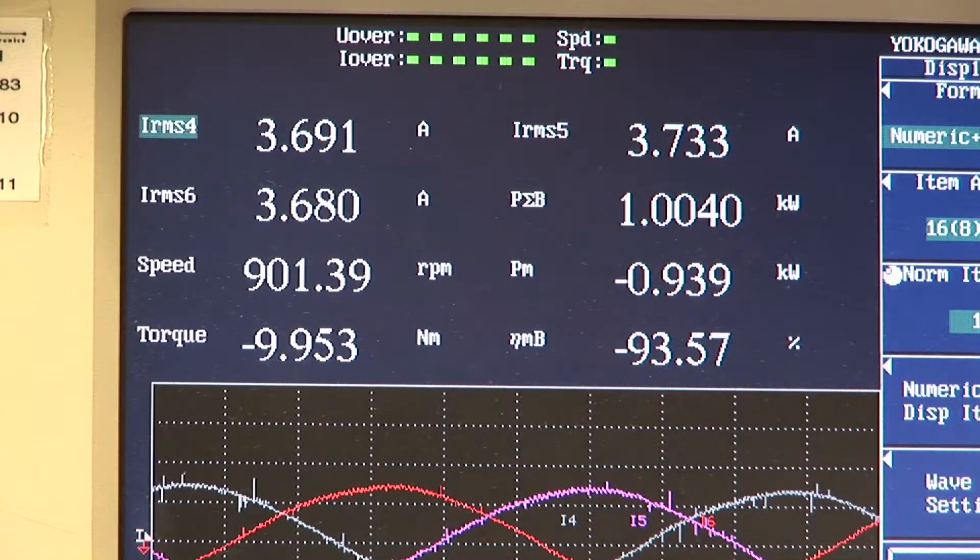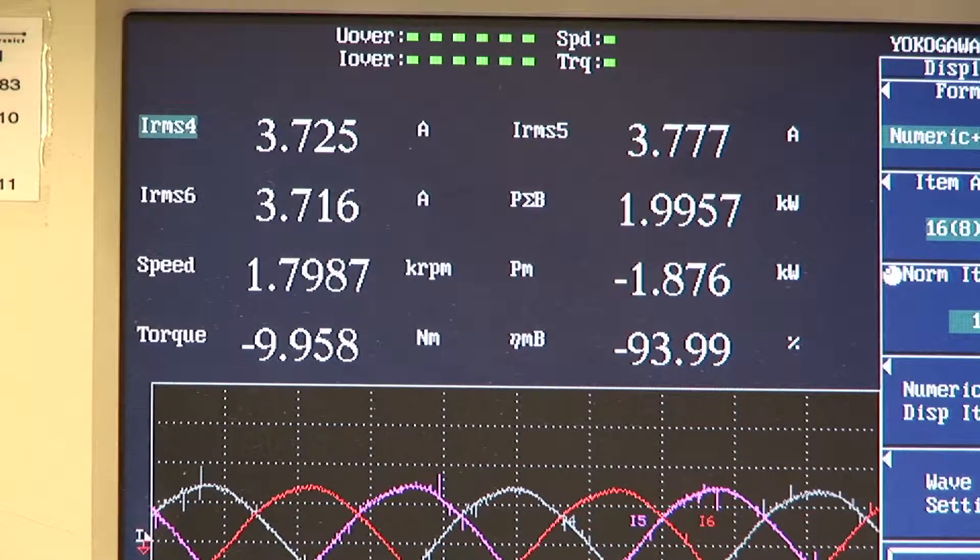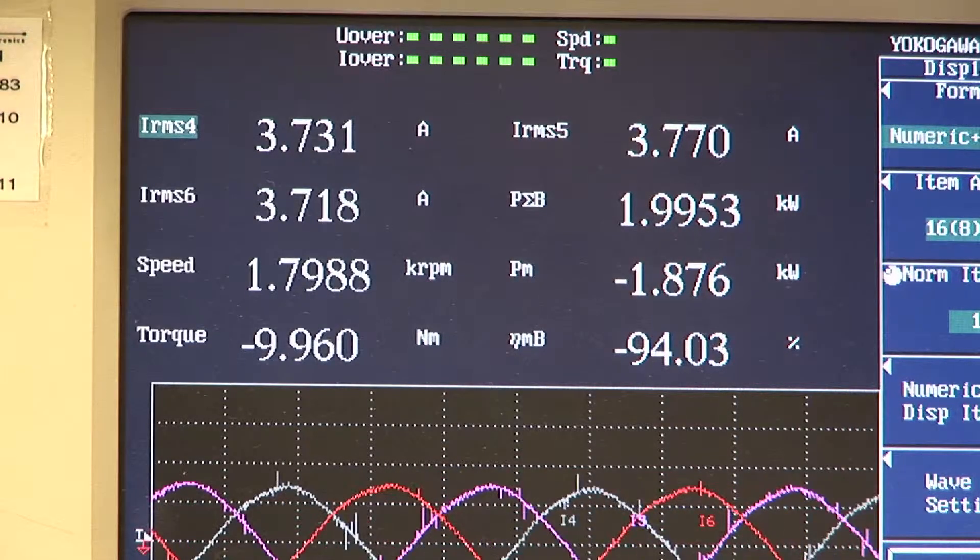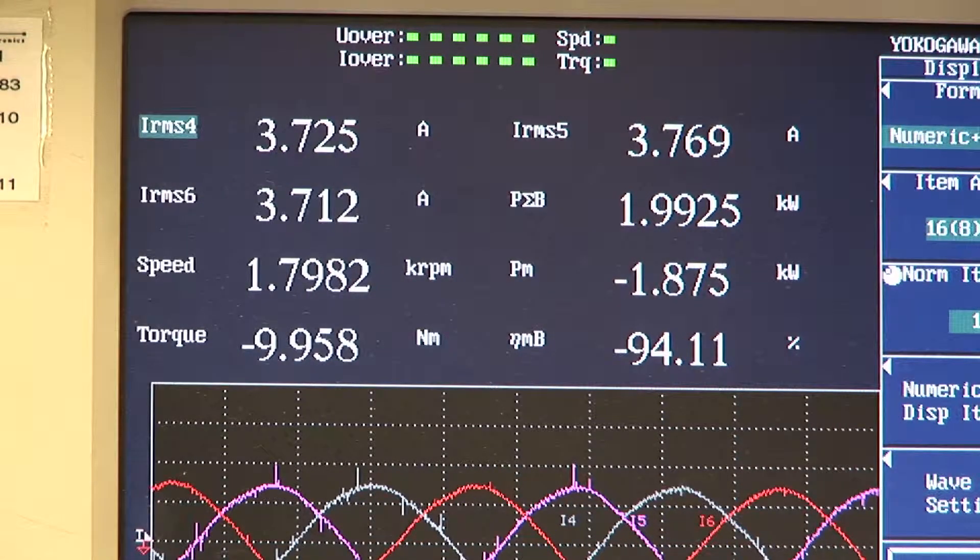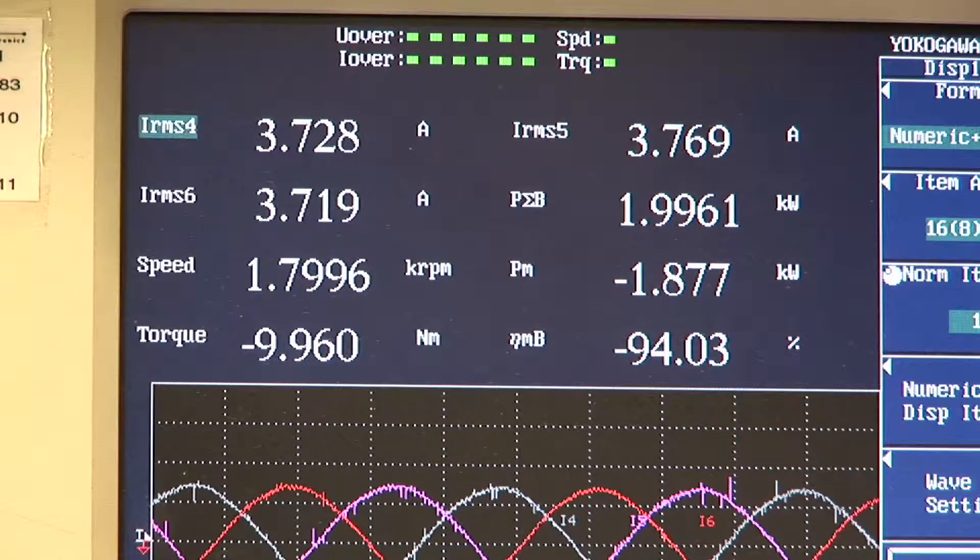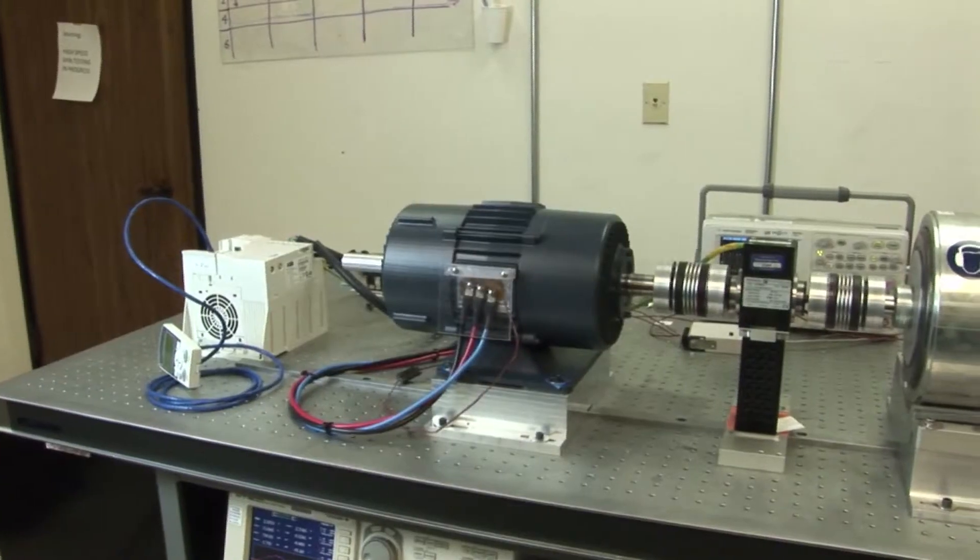We are now running at the rated speed of 1800 rpm at half the rated torque, that is 10 Newton meters. The premium plus motor's efficiency is almost hitting 94 percent.